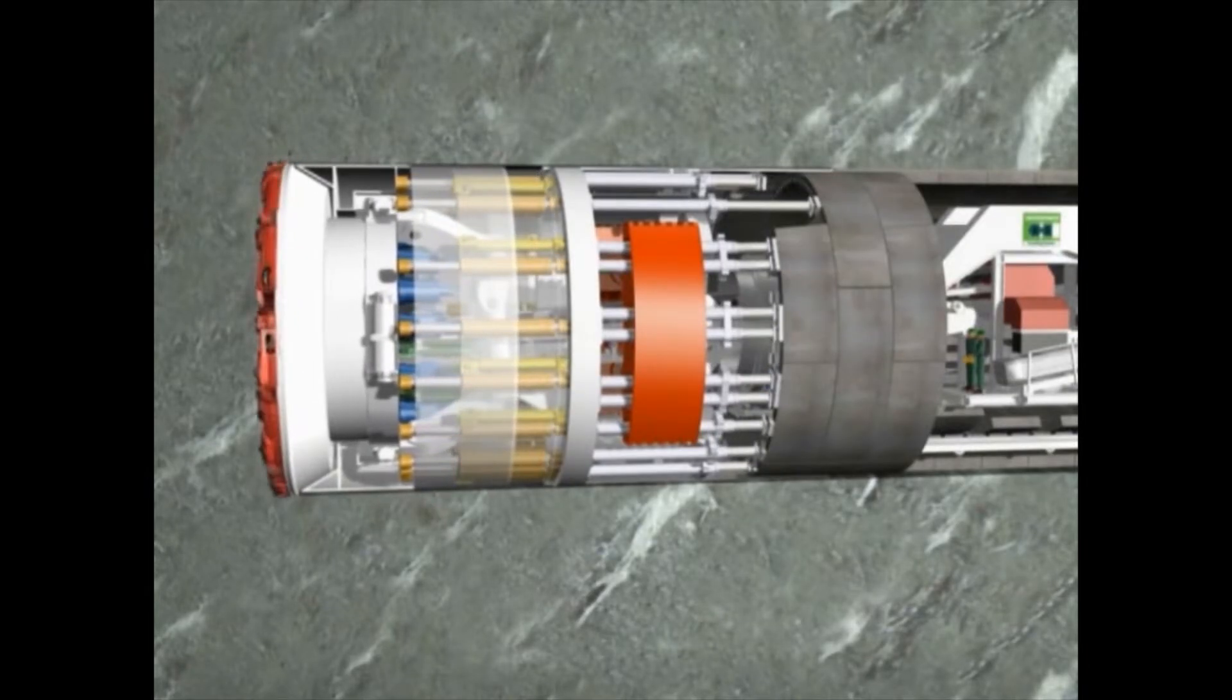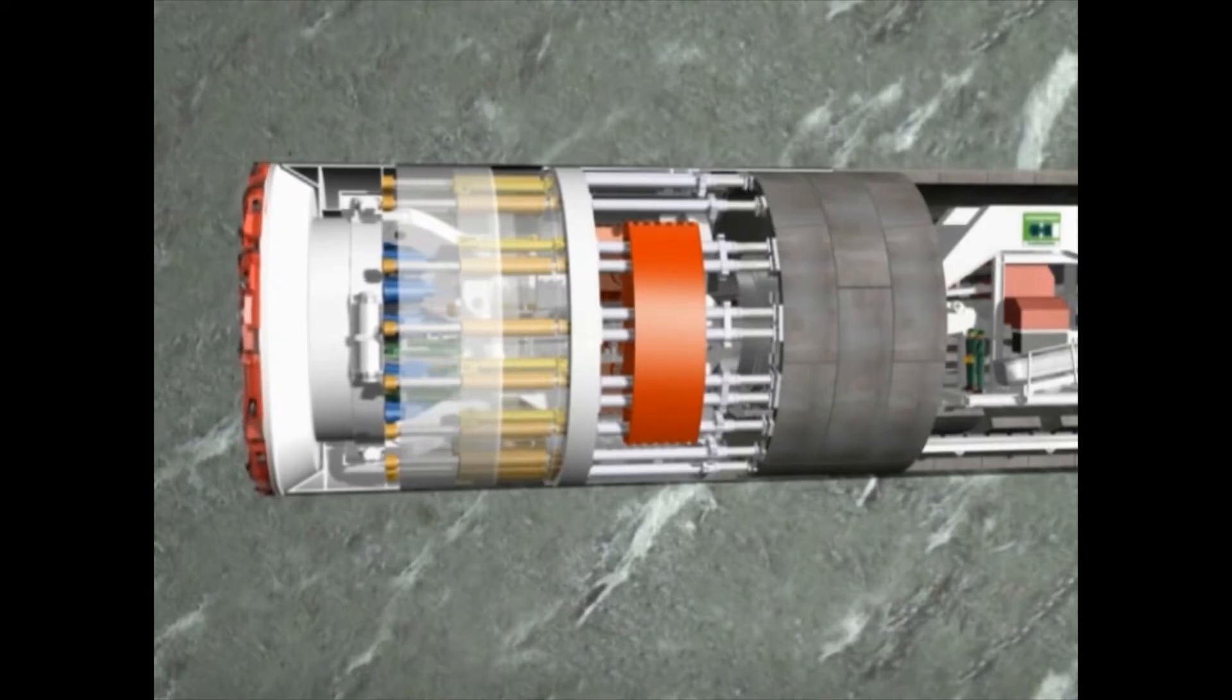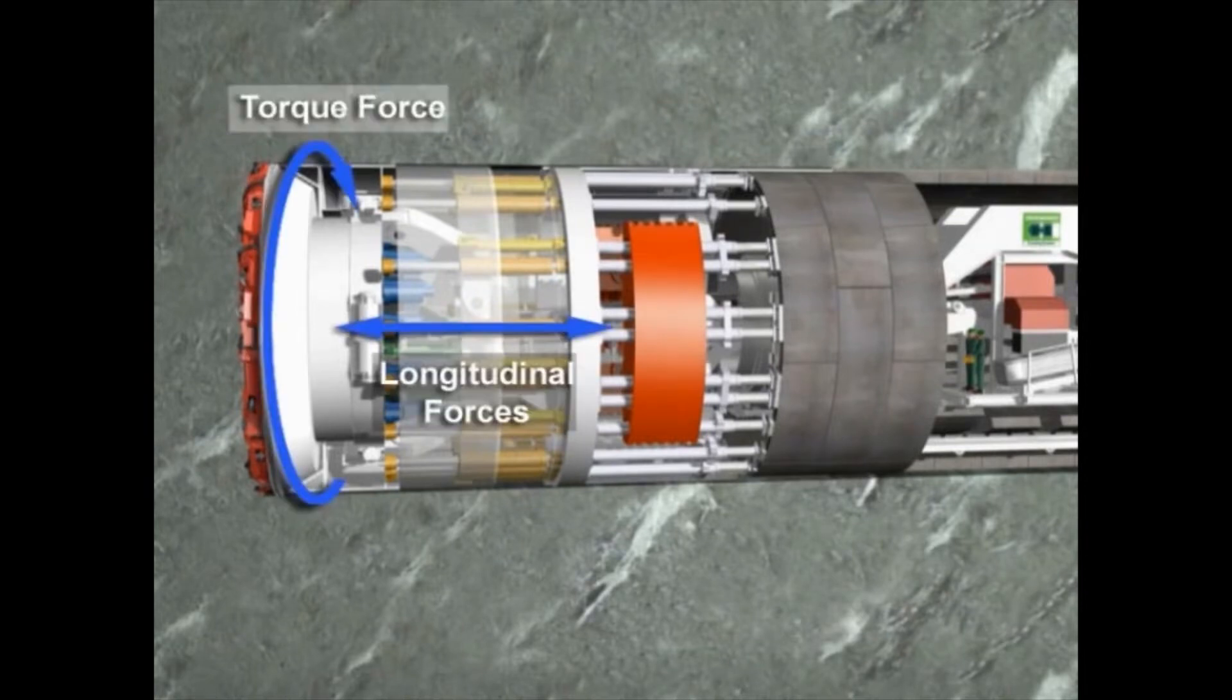The rear part of the machine is not moved during the tunneling progress. The reaction forces, torque, and longitudinal forces are transferred to the rock through the extended gripper shoes, which are located in the middle section of the machine.